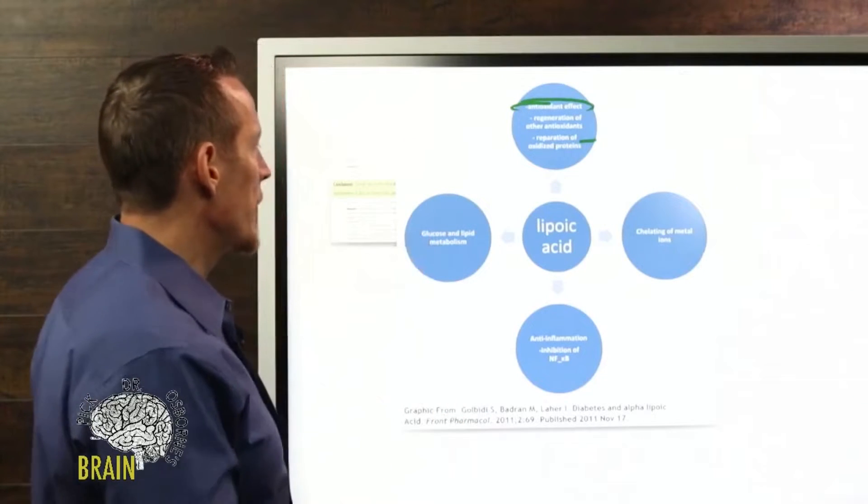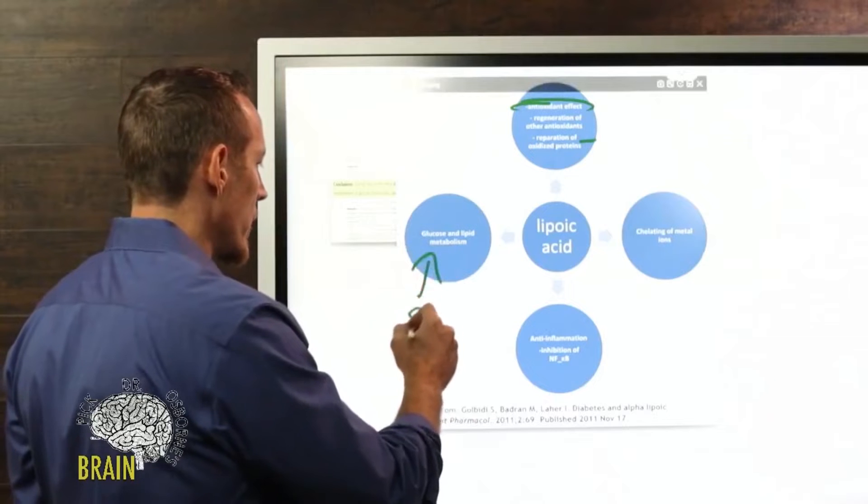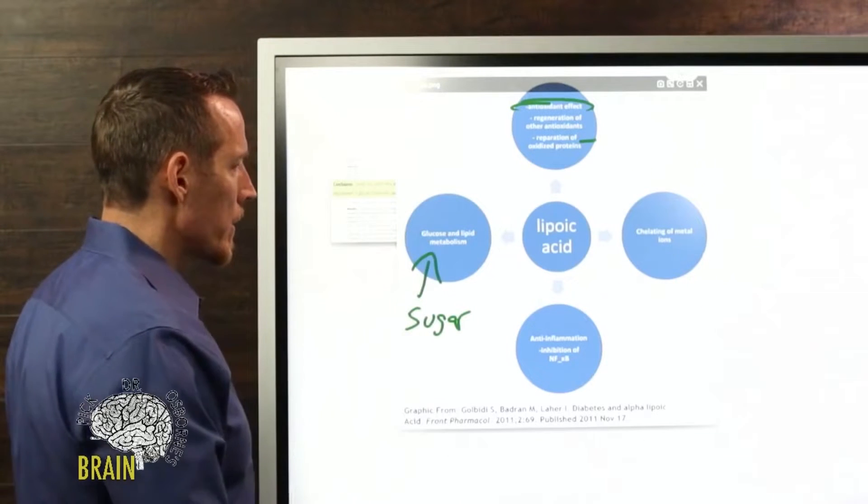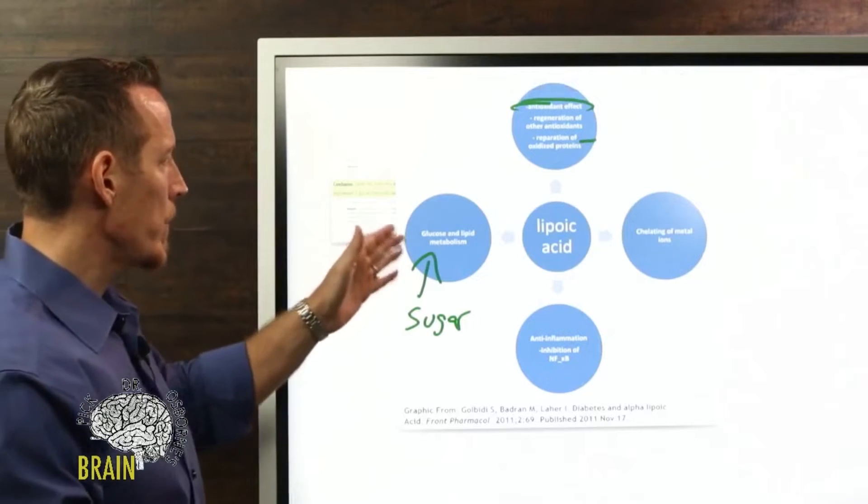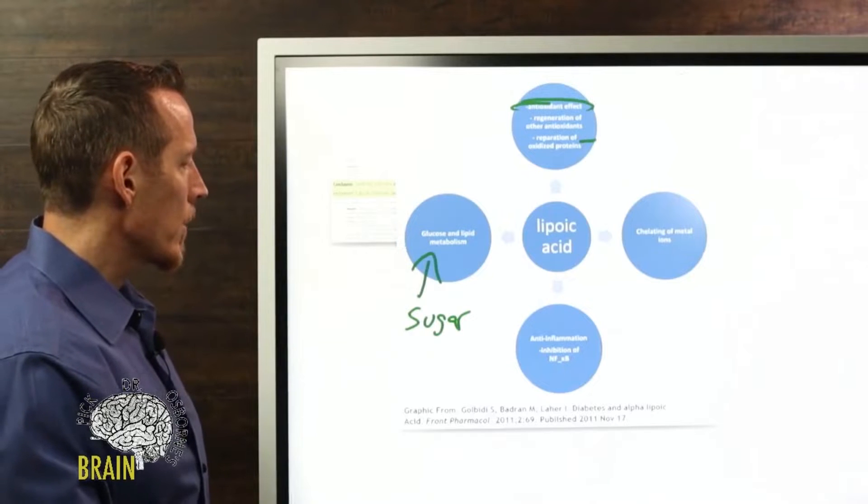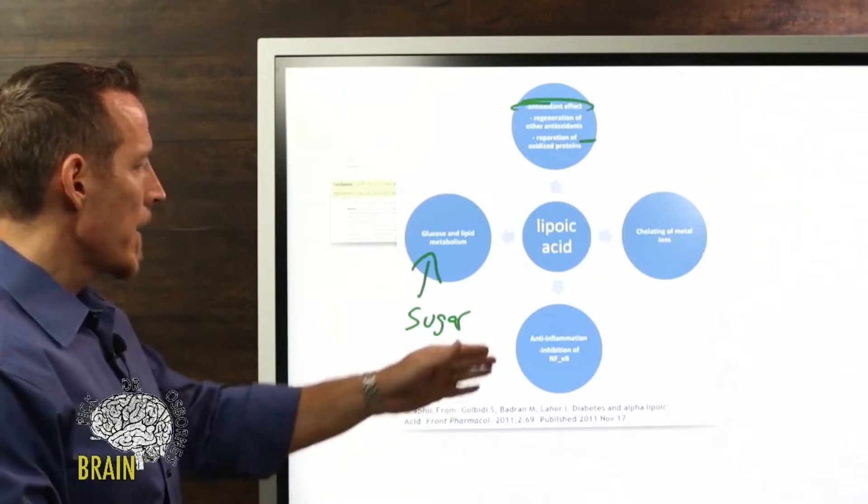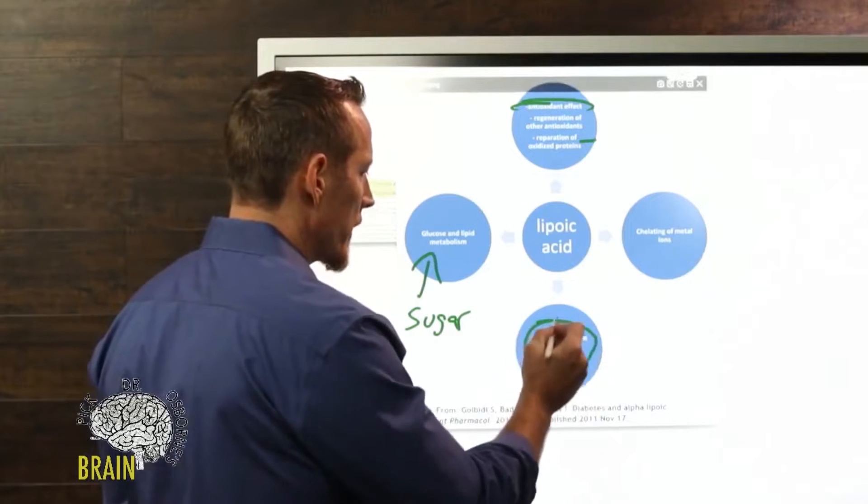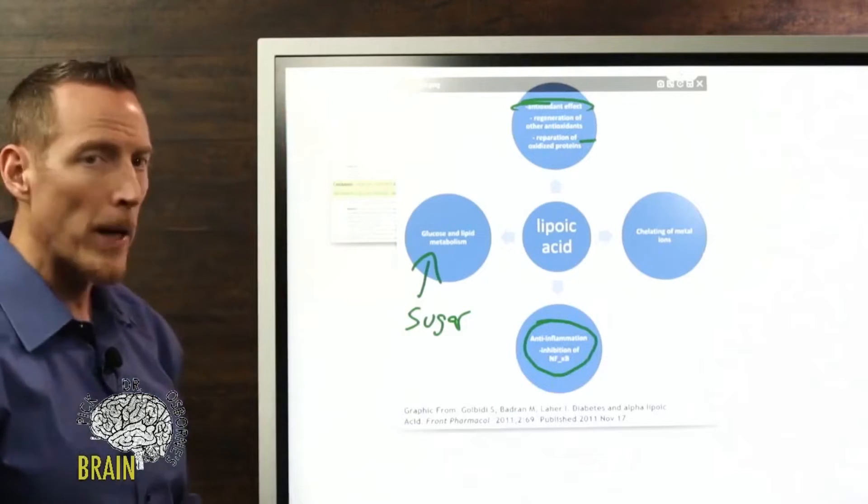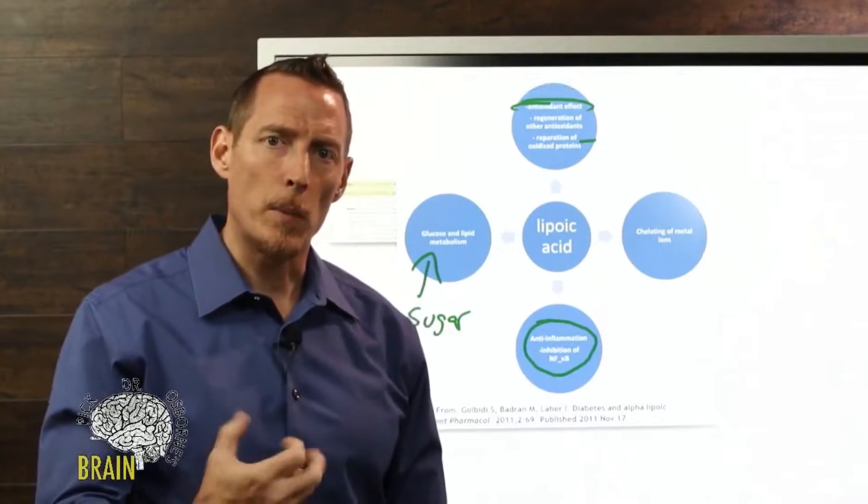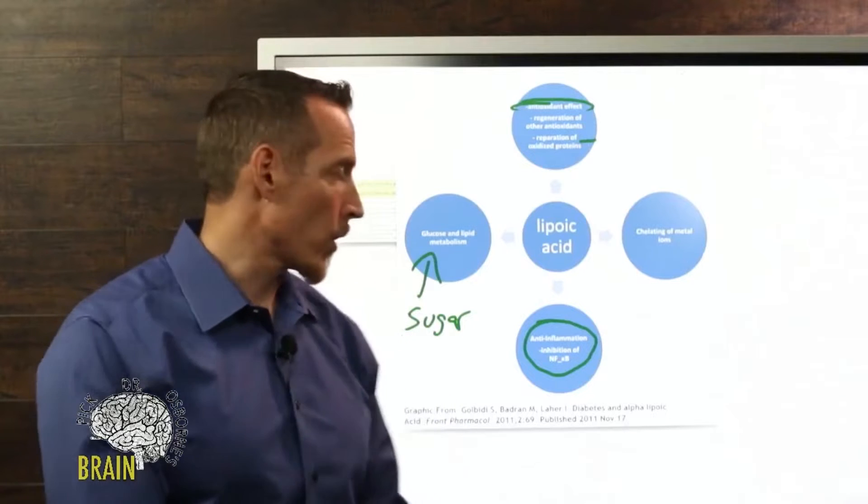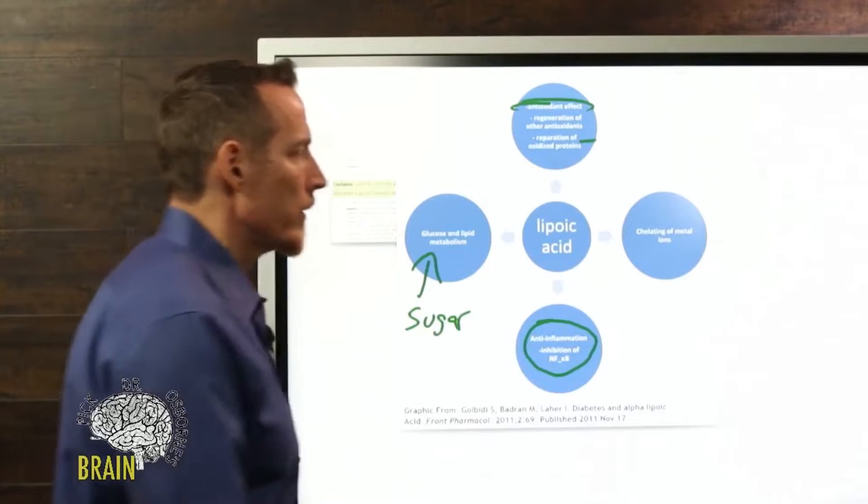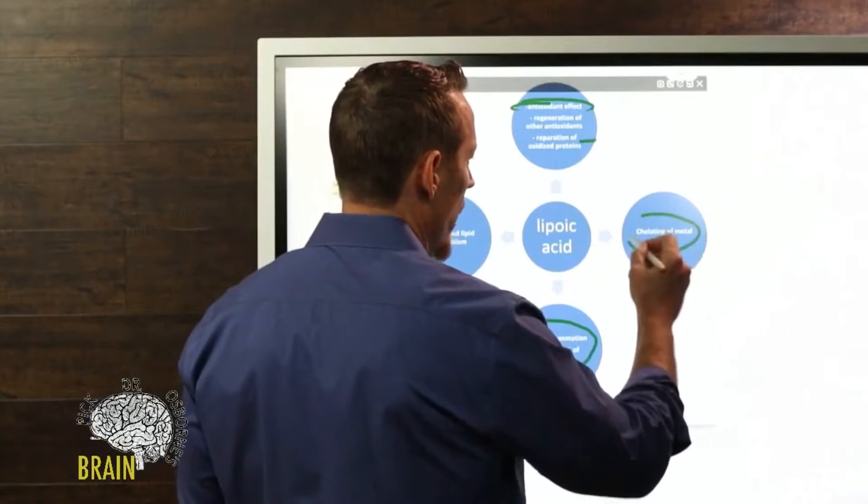Over here we have glucose and lipid metabolism. This is blood sugar, very important. I showed you research, especially that meta-analysis, that showed great benefit in lowering blood sugar for people who are taking lipoic acid that were diabetic. It also acts as an anti-inflammatory, inhibits something called NF-kappa B, which is a chemical compound produced when there's inflammation in the body that makes inflammation even worse. Alpha lipoic acid has been shown to inhibit this very inflammatory chemical.